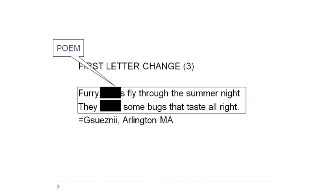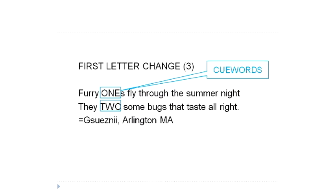Sounds kind of difficult. So how do you know where the answer words go? Oh, it's not difficult at all. The missing words are replaced by Q words, which are in all caps. You see them there? In this poem, the Q words are ONE and TWO. So if I take out the word ONE and replace it with the answer word, then this poem will make sense. That's exactly right.